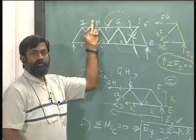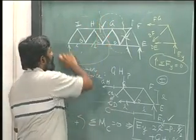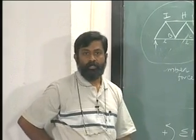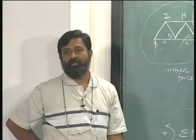In order to solve for GH, you have already done that. You will take a section like this and then solve for it. You need to do two separate sectioning in order to solve for this problem. If there are too many forces to be found out, might as well go for method of joints.